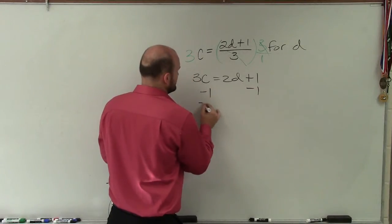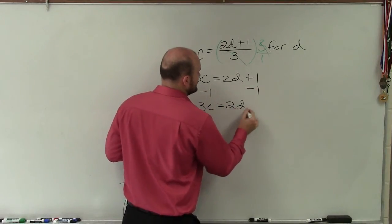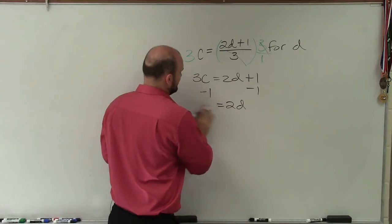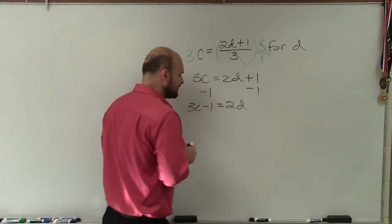Always undo addition and subtraction first. So I have 3c equals 2d. Ah, 3c minus 1 equals 2d.